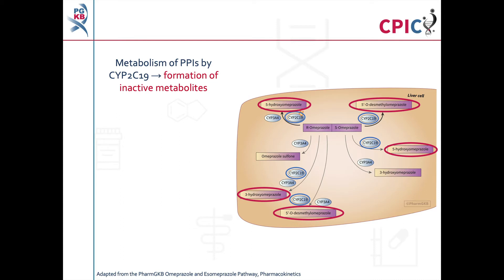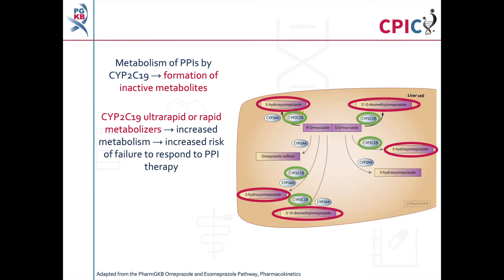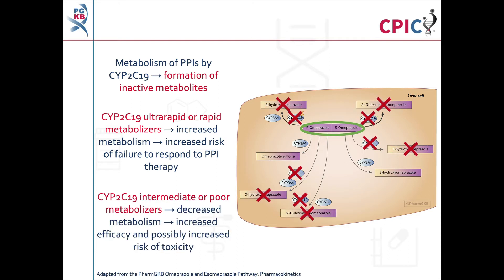PPIs are metabolized in the liver by CYP2C19. This metabolism inactivates PPIs. In CYP2C19 ultra-rapid or rapid metabolizers, metabolism of PPIs is increased, which increases the risk that the patient will fail to respond to PPI treatment. In CYP2C19 intermediate or poor metabolizers, PPI inactivation is decreased. As a result, these patients experience increased efficacy of PPI therapy and are possibly at an increased risk of toxicity.